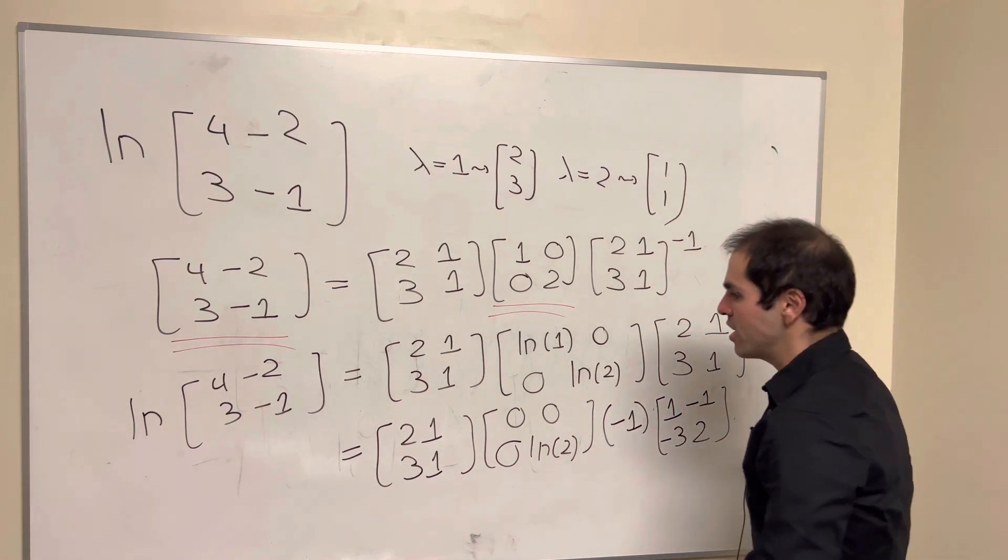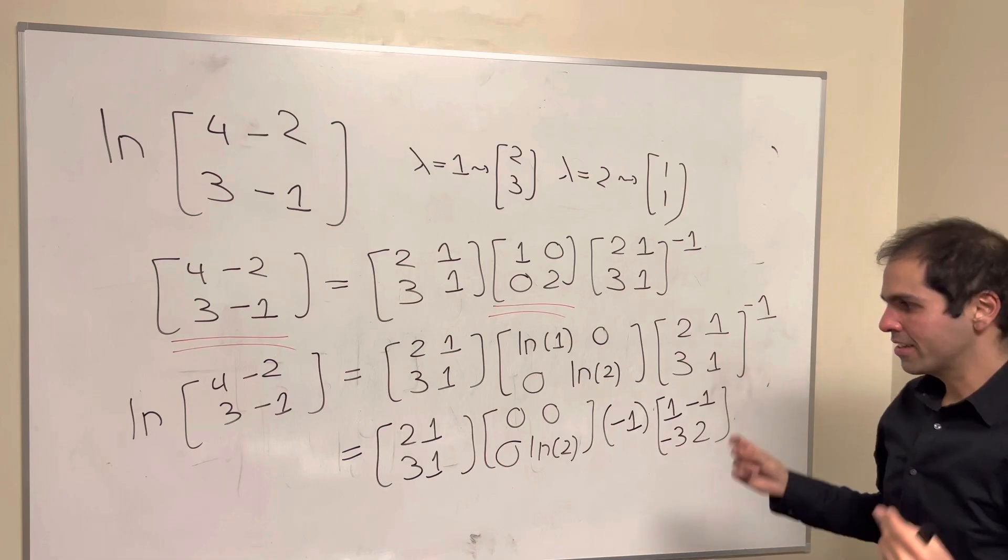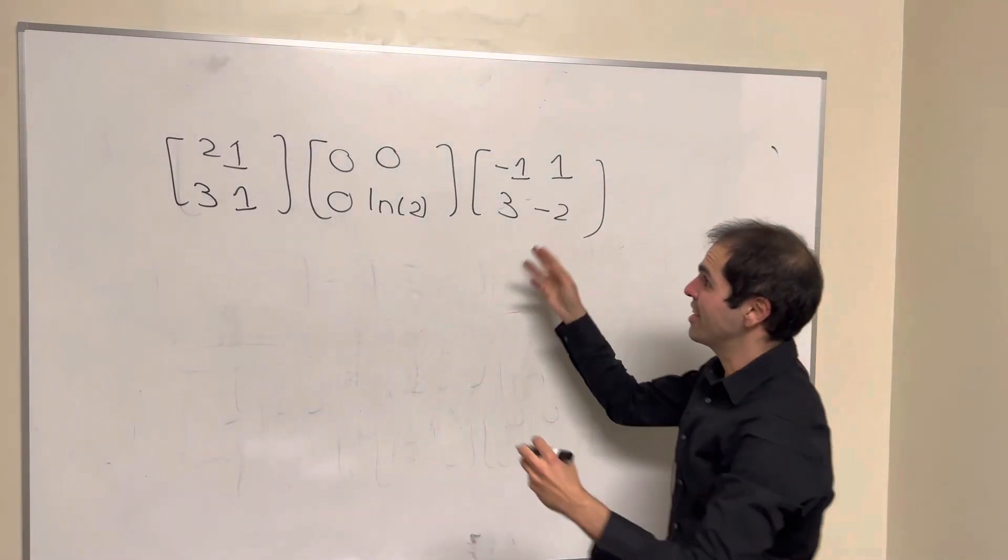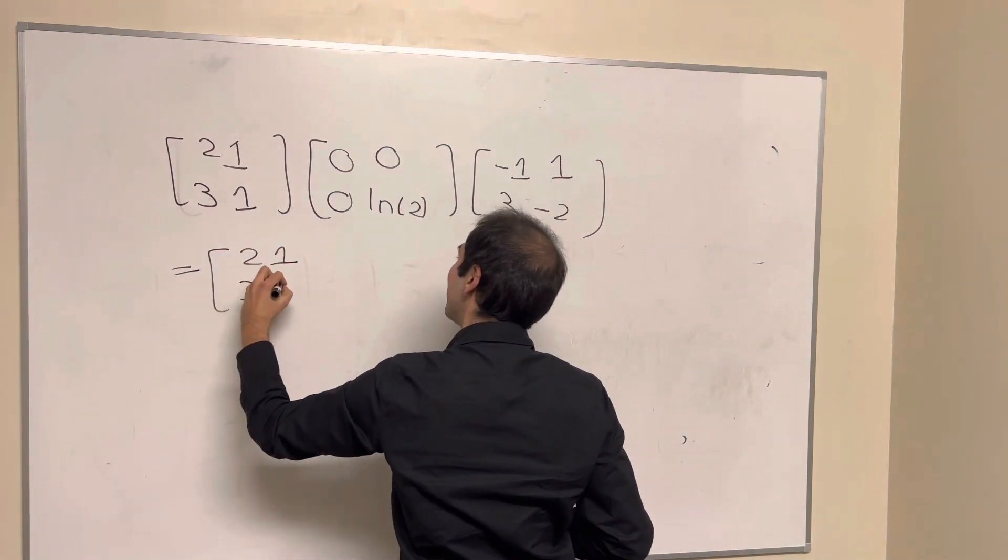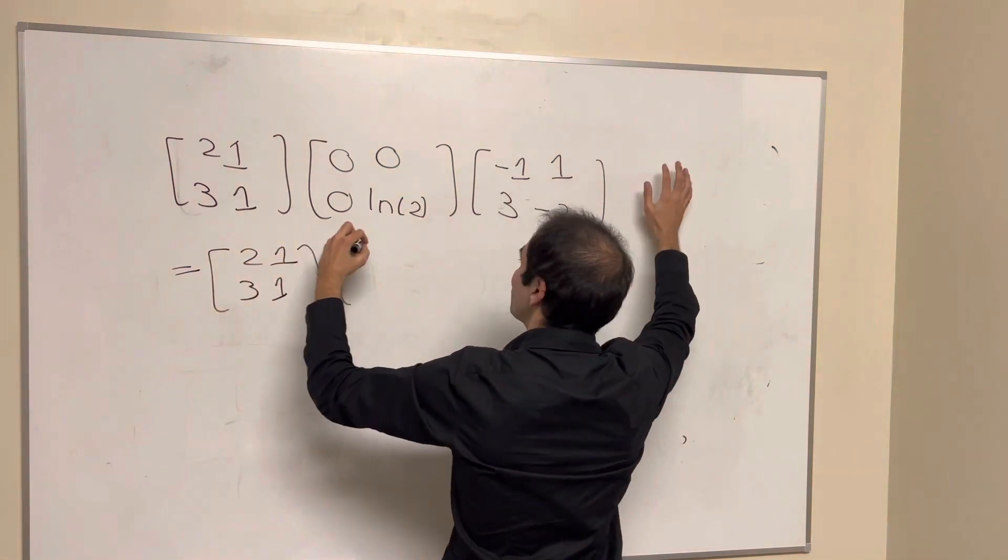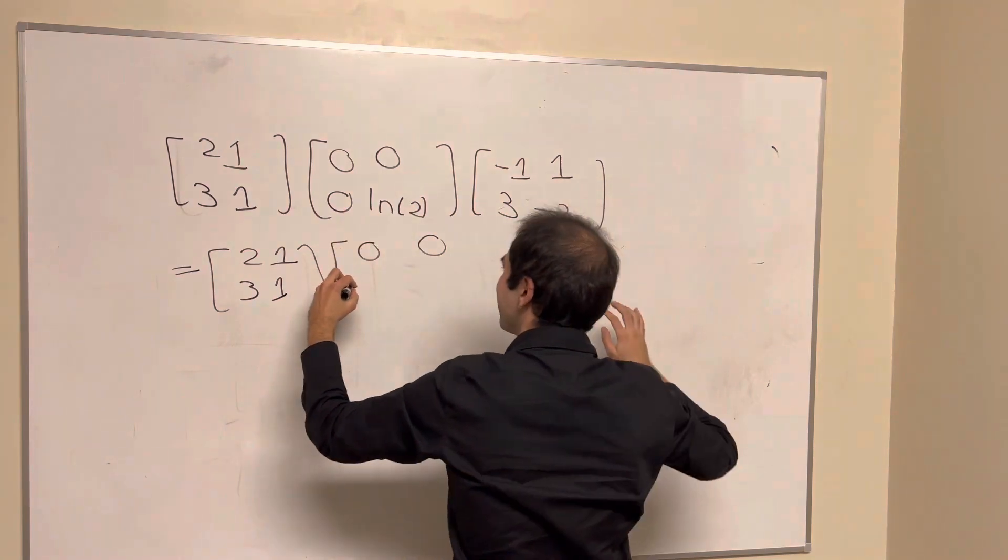And then, essentially, what you get is the following matrix. So, ln of A is this, and then just calculate this, so 2, 1, 3, 1, so this row just becomes 0, how nice.